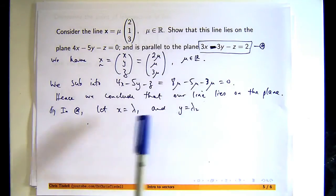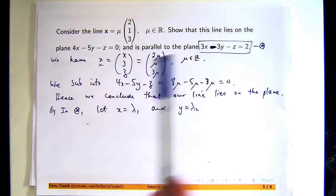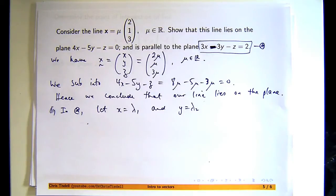Good question here. Why did I choose those? No reason. The only reason I chose those is because the coefficient of z is 1. So when I rearrange everything and make z the subject, I won't have to divide by any numbers.